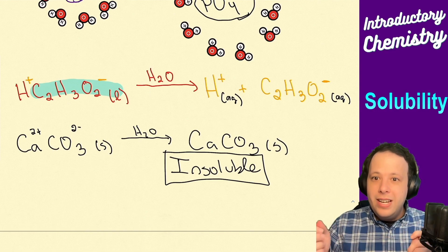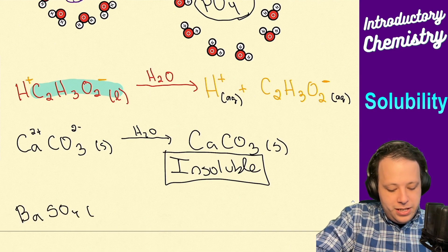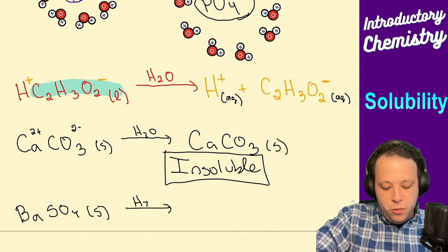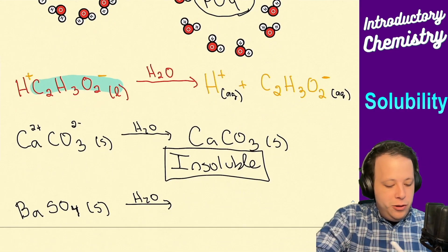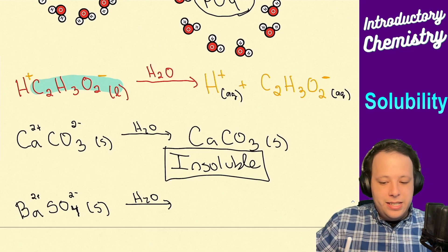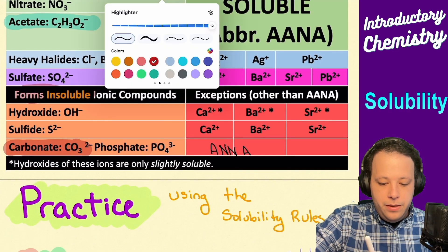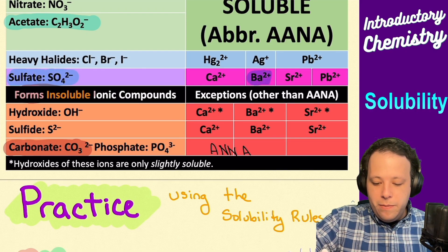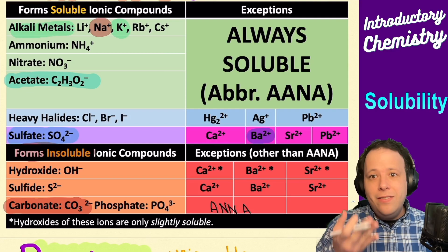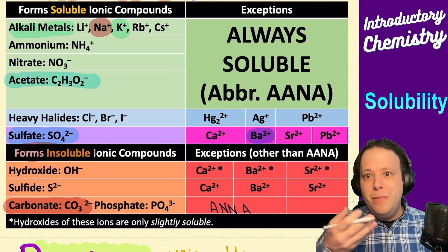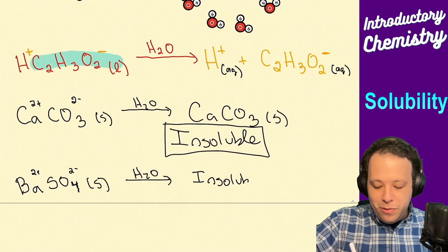What about barium sulfate — adding BaSO4 to water? We're going to look for either Ba2+ or SO4 2-. Sulfates are generally soluble, but there is an exception: when they're bound to barium. Being that it's bound to barium, this compound is insoluble.